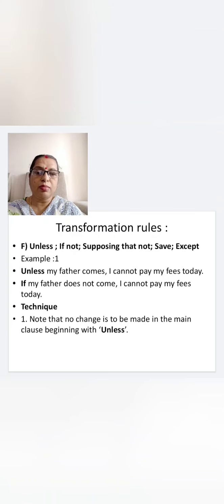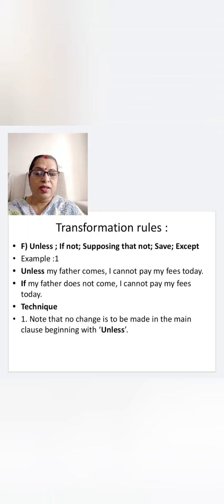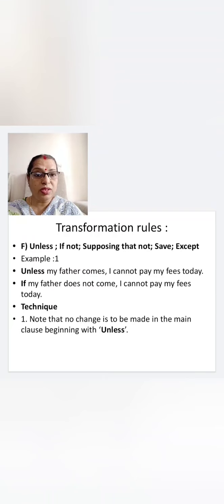When we studied about 'if not', we already studied a little about 'unless' — that is, the subordinate conjunction used for transformation. Let us study something more about this. The equivalents of 'unless' are: 'if not', 'supposing that not', 'save', 'except'. Let us see with examples.